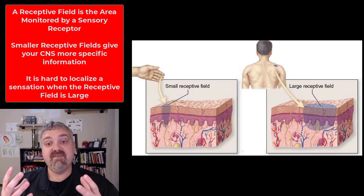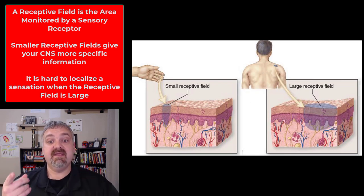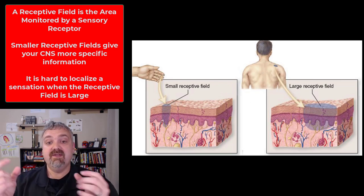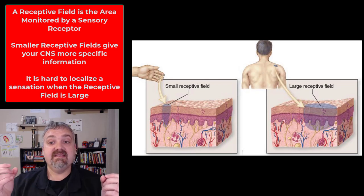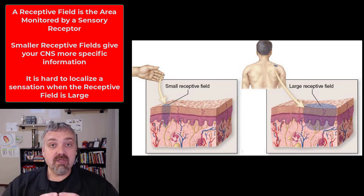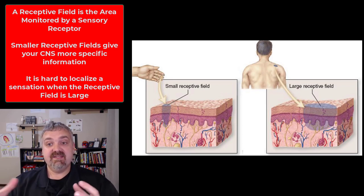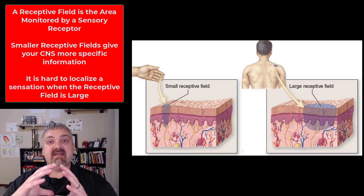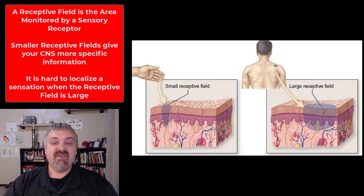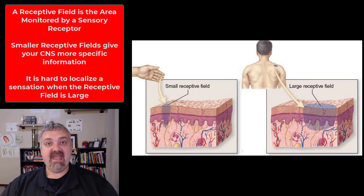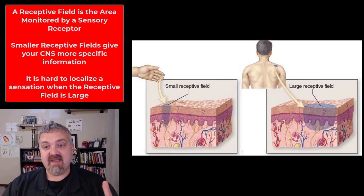Your brain knows where a certain type of stimulus is coming from because of these receptive fields. The smaller a receptive field, the more fine and specific the response and information sent to the brain. Your back has really large receptive fields. Organs have huge receptive fields — so if you have a stomach ache, you can't say exactly where your stomach hurts, you just know you have a stomach ache.